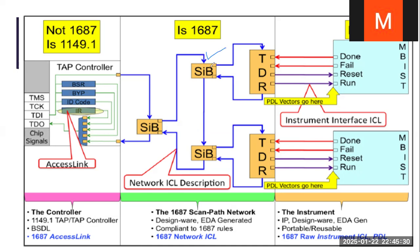So the SIB is found only in iJTAG. The TDR to the instrument is connected to the PDL. That is the basic difference between JTAG and iJTAG. In the case of JTAG, the TAP controller is directly connected to the TDR.